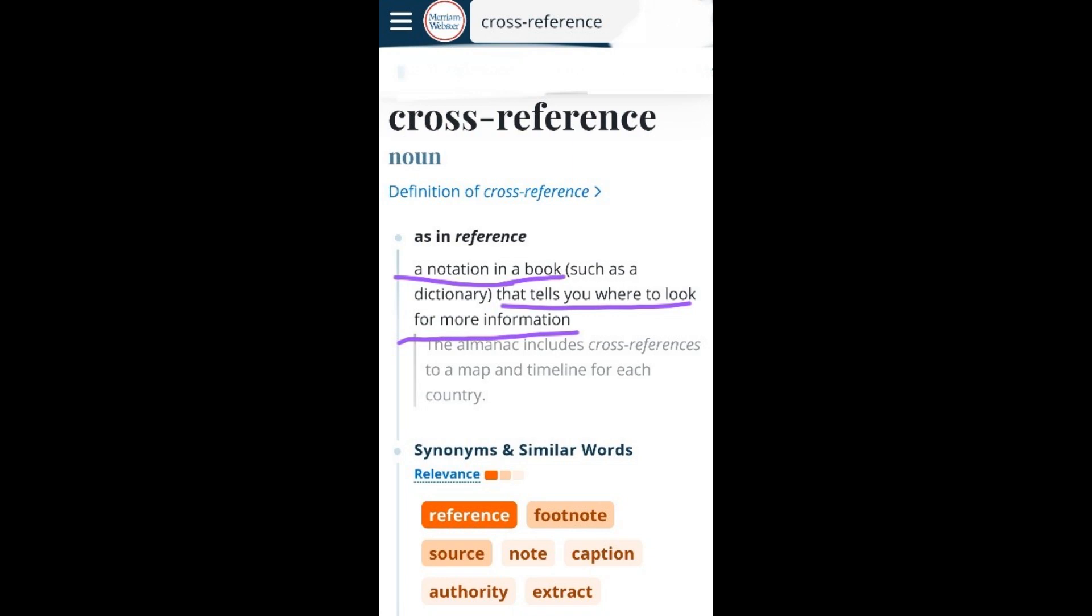So, for example, the almanac included cross references to a map and timeline for each country.